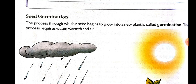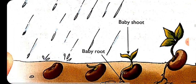This process requires certain conditions so that the seed can germinate easily. One condition is that it should get proper warmth — the seed requires proper heat. It also requires some water, and also air. If these three things are provided to the plant's seed, it will grow into a new plant.